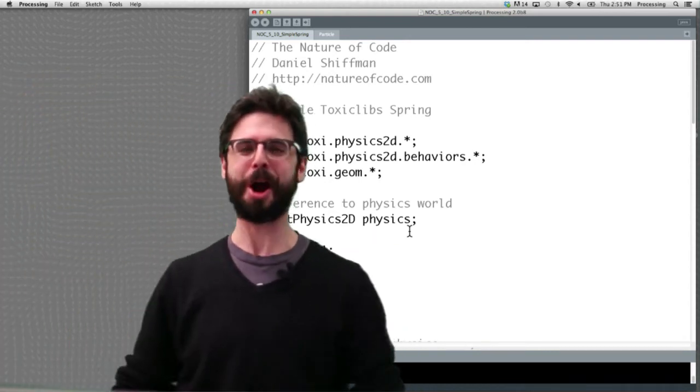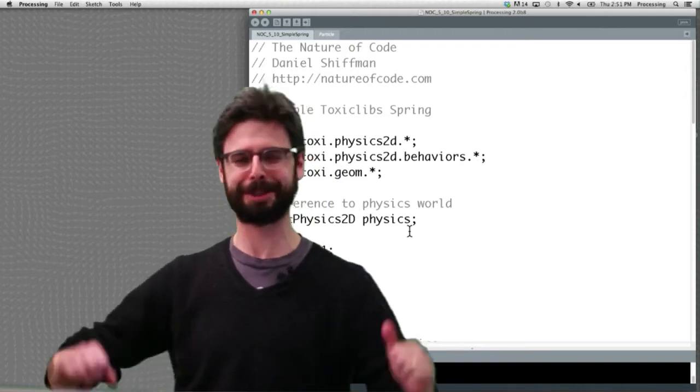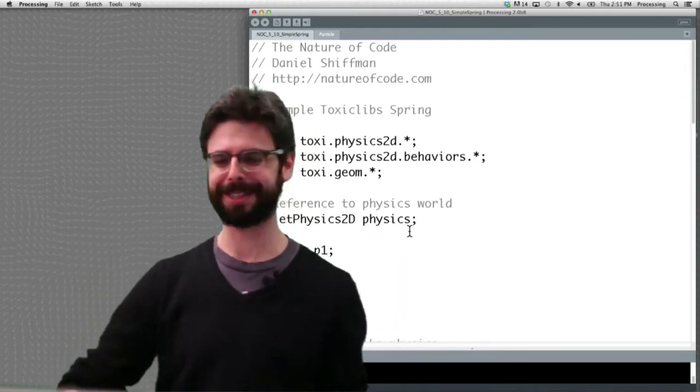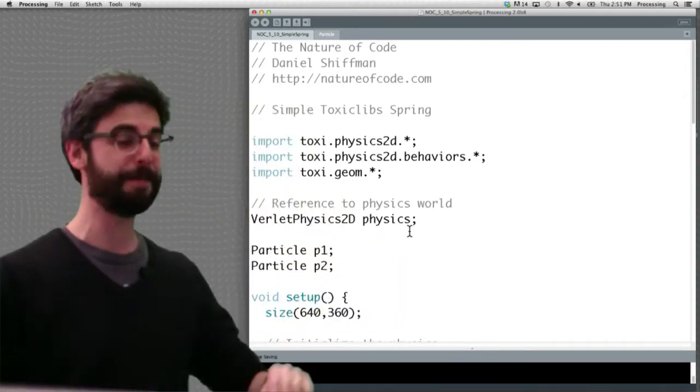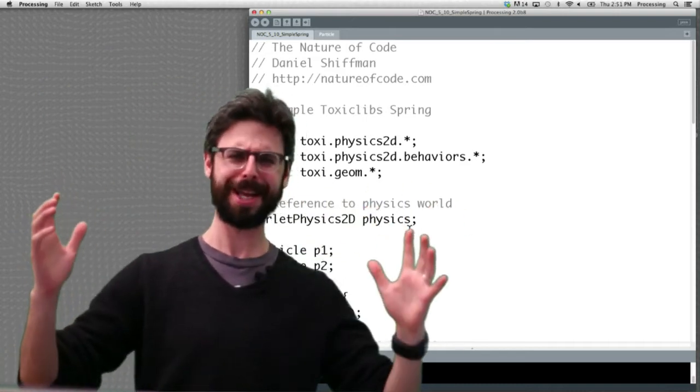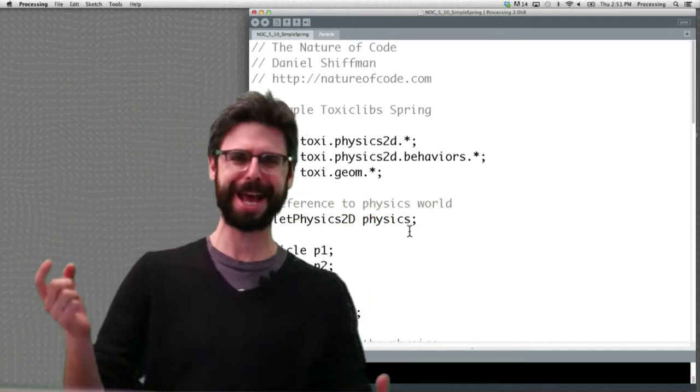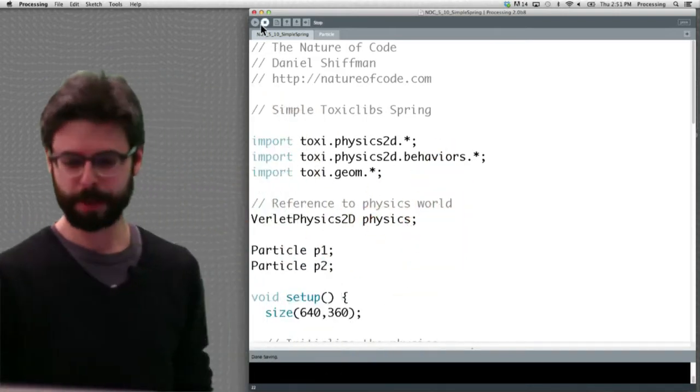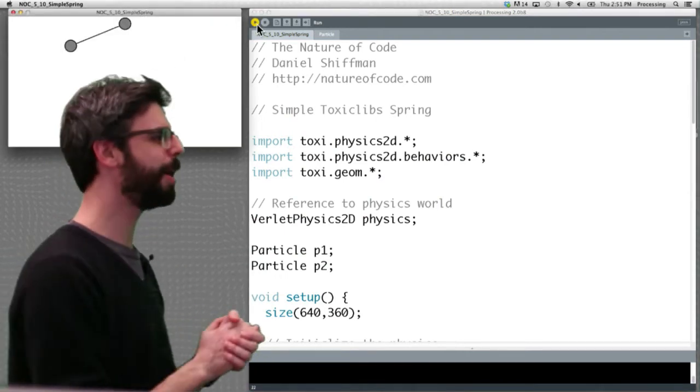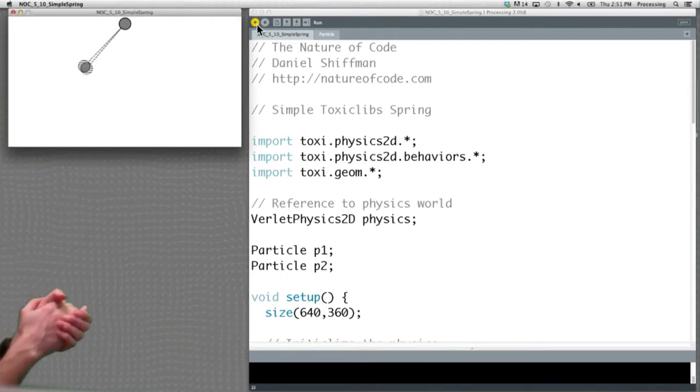Hi, okay, we are ready to make our very first ToxicLibs particle and spring example. This is actually the example we're going to make or already made, so we're just going to look at it and talk through it. You can see this looks very much like many examples we've had before in the past.